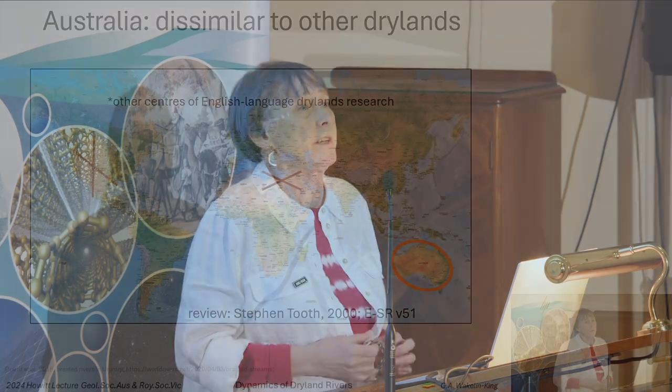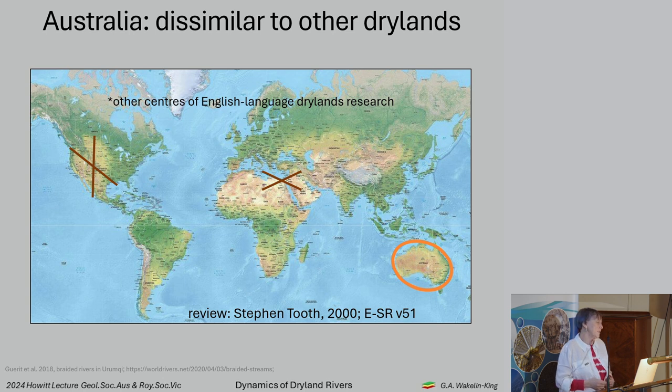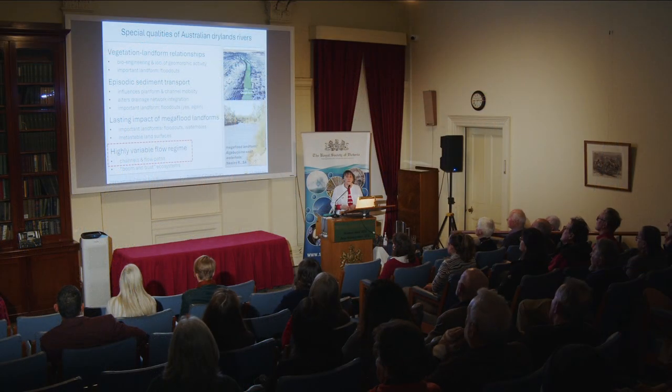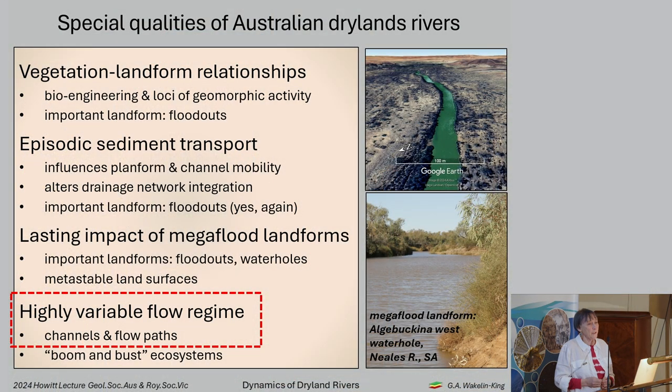All this context means that in some ways we are dissimilar to the other drylands that people know best. The west of the United States and the Middle East are places where much of the foundational literature in geomorphology and dryland sedimentology was written, which means that ideas from other drylands don't necessarily apply here. Australian dryland rivers have so many special characteristics — I can only talk about one, and I'm going to focus on highly variable flow regimes and what that means for channels and flow paths.